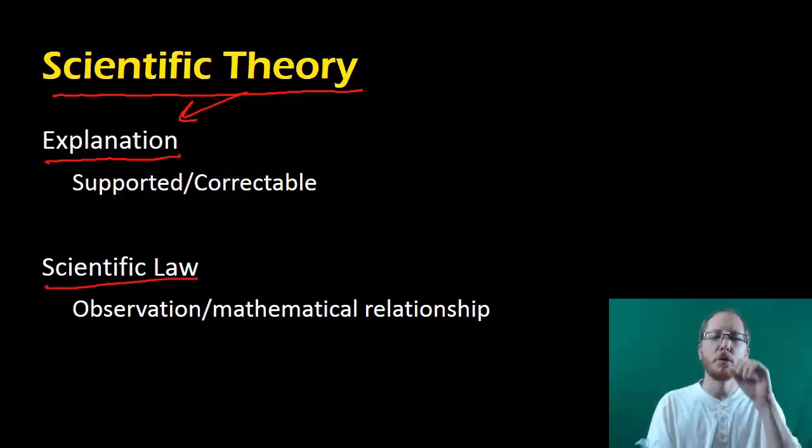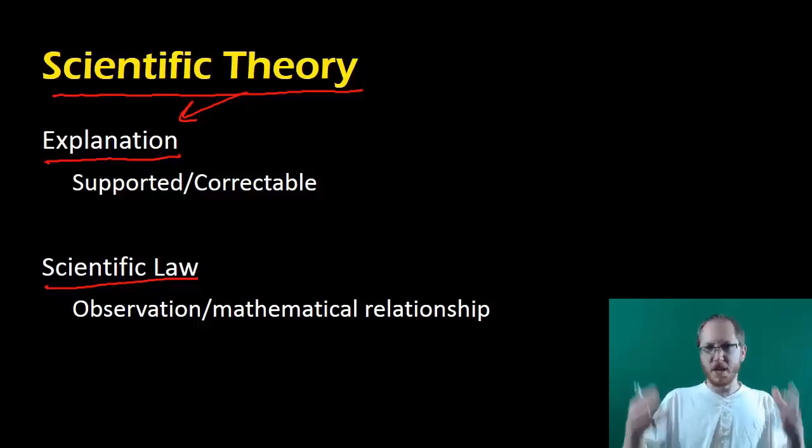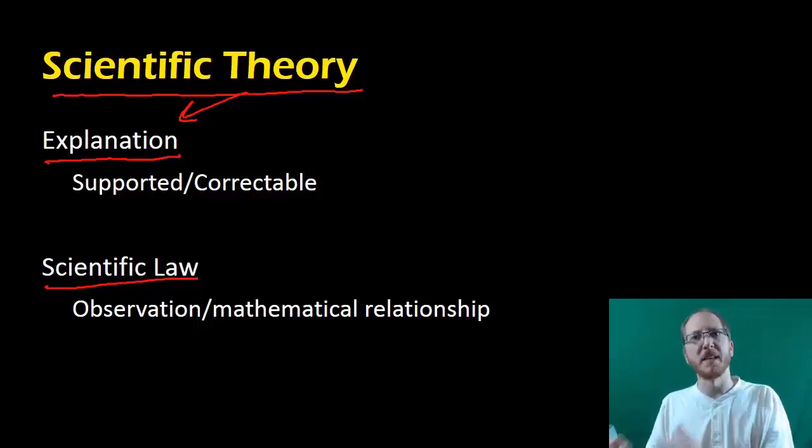Now a law is kind of interesting because some people get these confused. A law is more just observations that we always see or mathematical relationships that we always see. They're not an explanation. It's more just like what goes up must come down. We have this law of gravity because we know that things, when they go up, they'll move towards the body, they'll fall back down. But that doesn't explain why. It's the theory of gravity that ultimately explains why things fall back down.